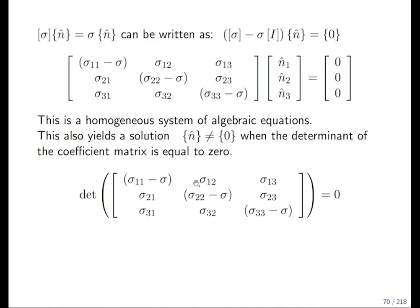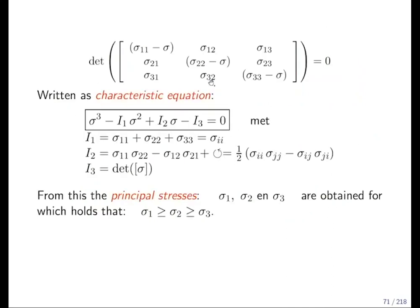So now you remember the determinant, the definition of the determinant of a matrix. Just calculate it, write it down, and you will see that at the end what comes out is the so-called characteristic equation. The characteristic equation is third power in the unknown sigma. So sigma is the unknown. There is I1, which is summarizing a few of the stress components. There is I2, which is summarizing a few more of the stress components. This means that there are many more.